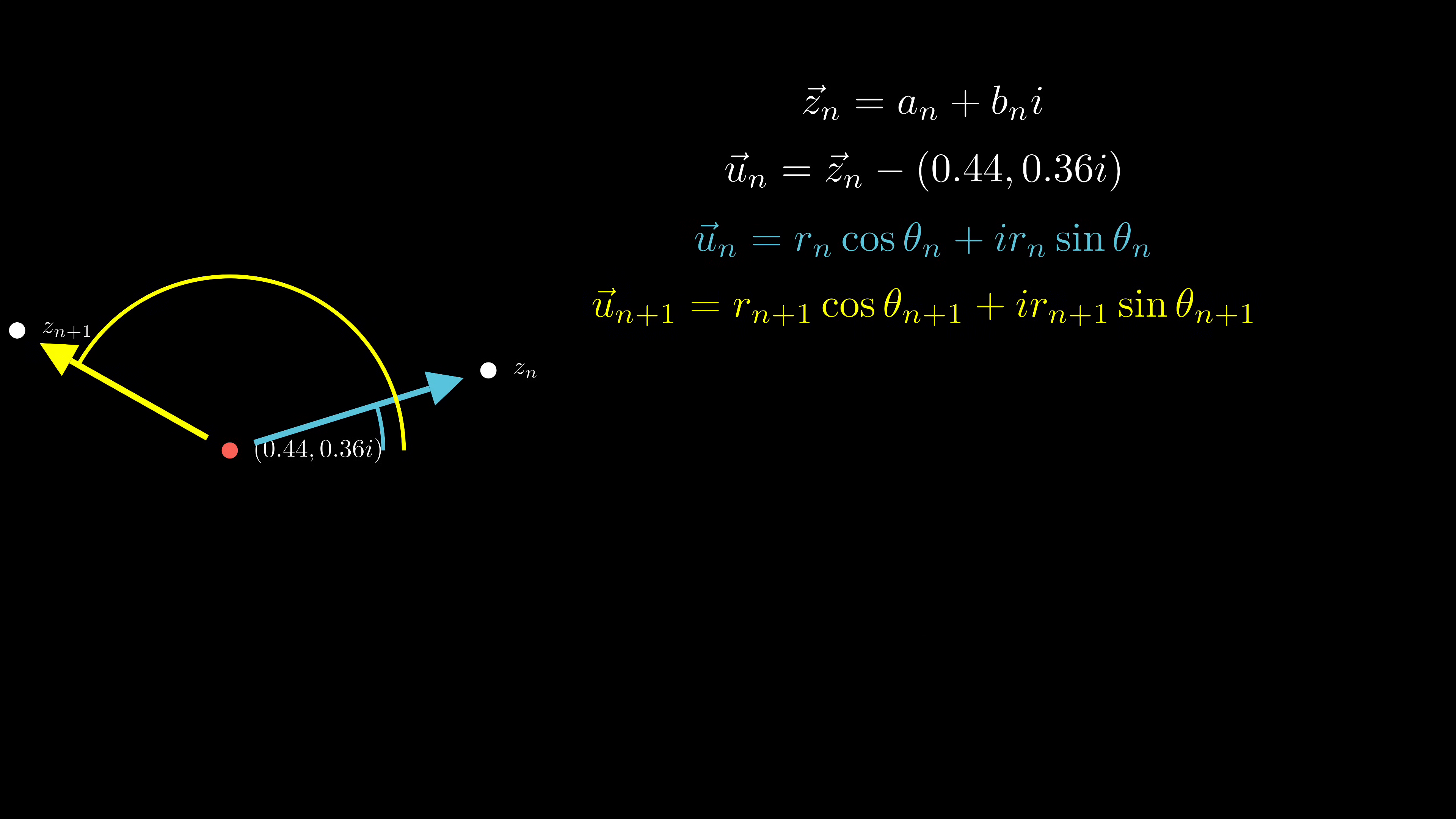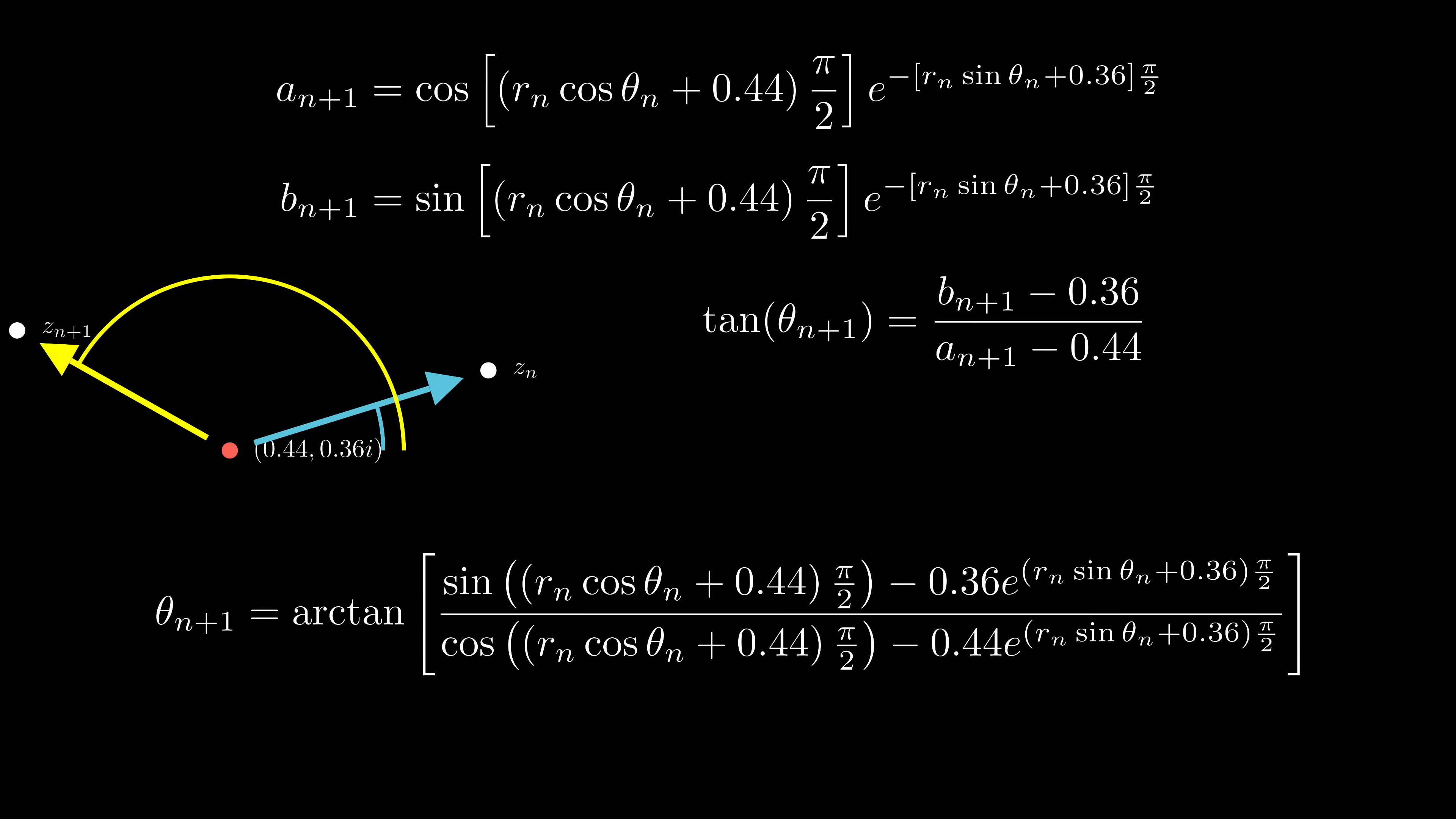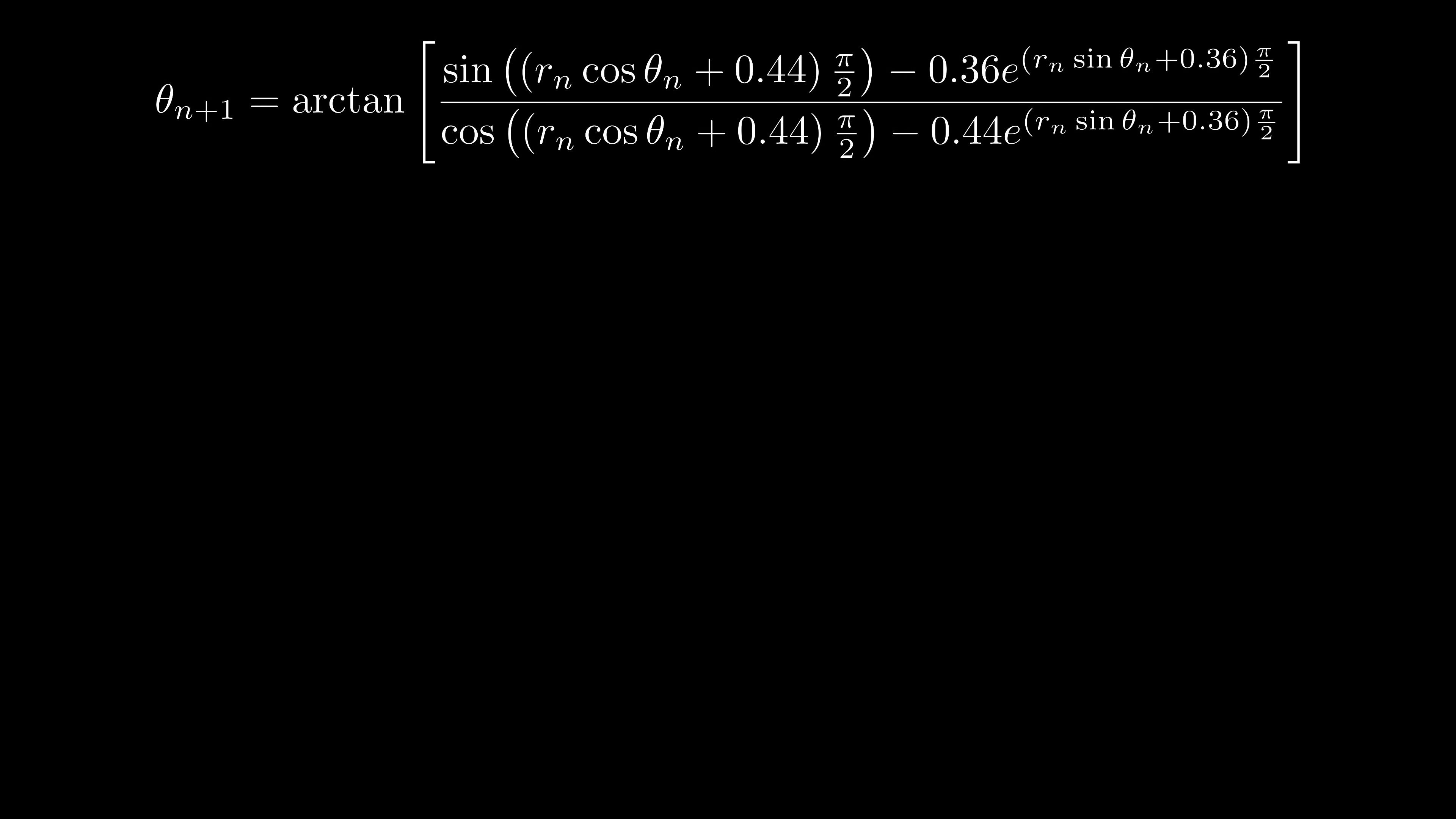Let's use Rn and theta n to replace An and Bn in our recursion formula. So far so good. Next, let's talk about the tangent of theta n plus 1. We can substitute Bn plus 1 and An plus 1. We have theta n plus 1 on the left-hand side and theta n on the right-hand side.